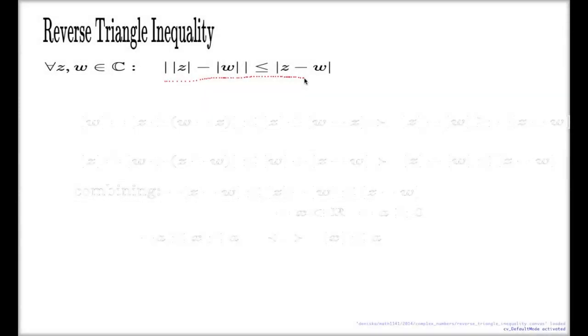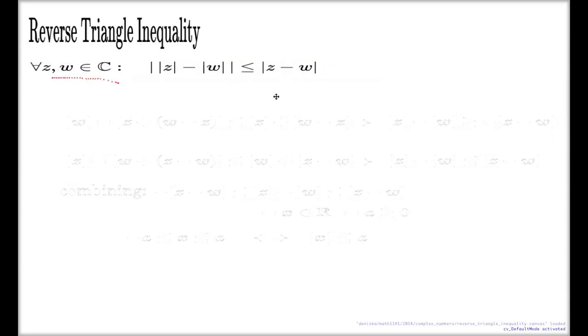The reverse triangle inequality says that if you take two complex numbers z and w, then for those two numbers you will have the inequality like this. Look at this, the left hand side says that the difference of absolute values in absolute value will never exceed the absolute value of the difference. I wonder if you can repeat that.